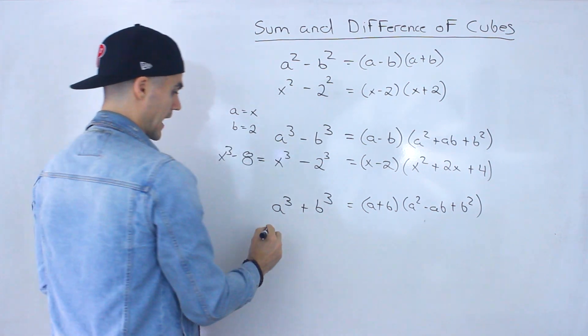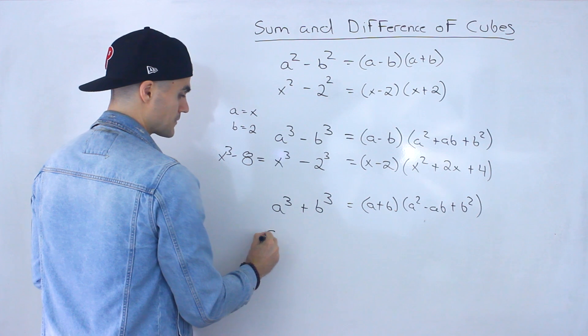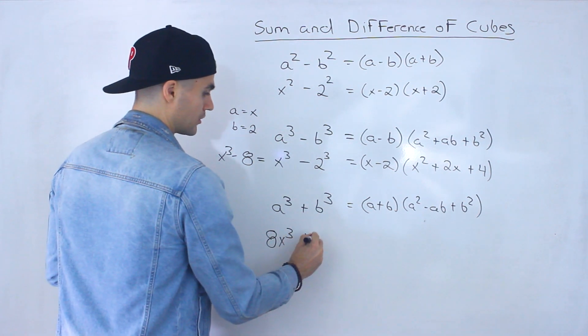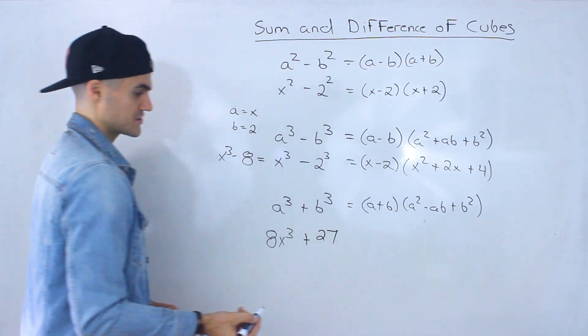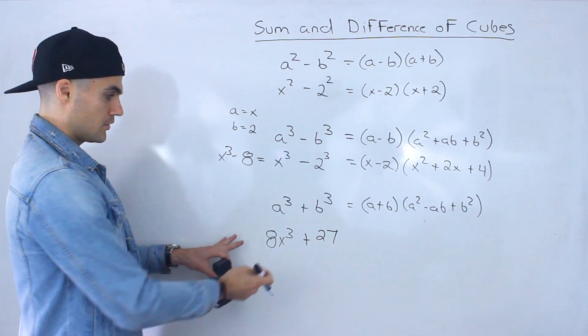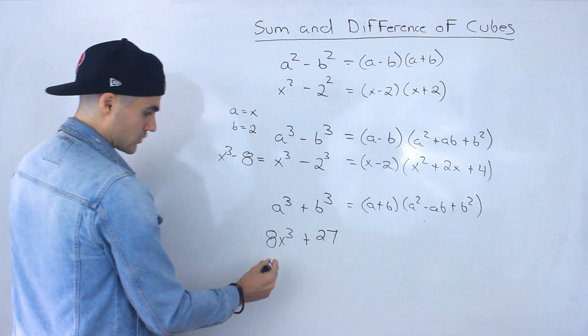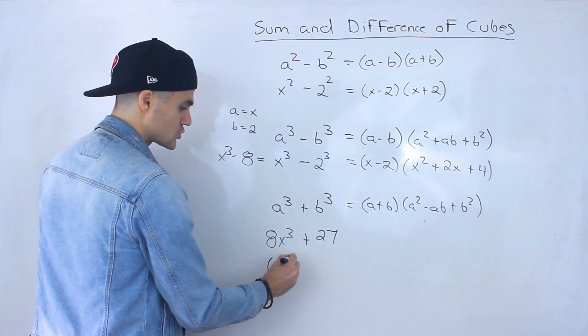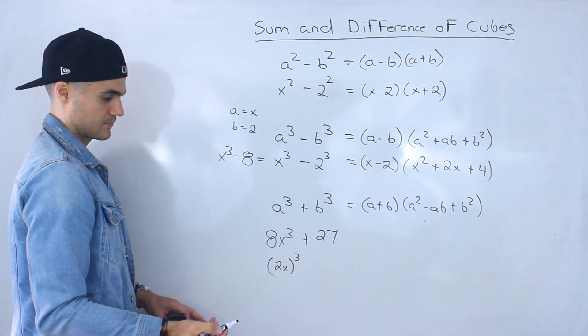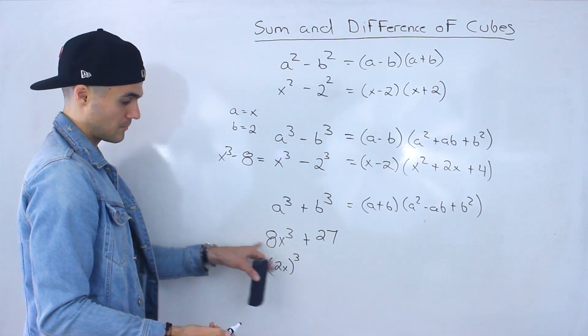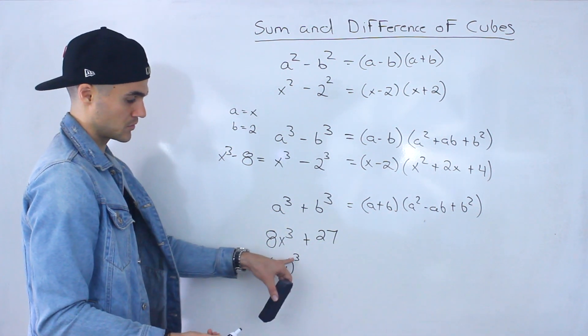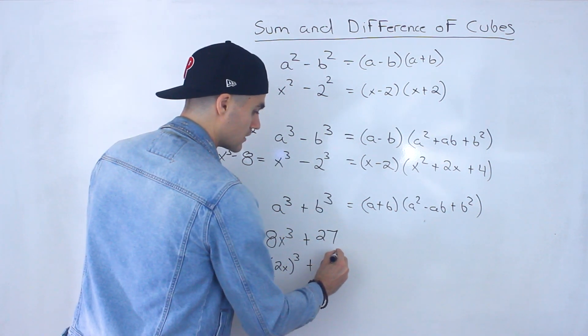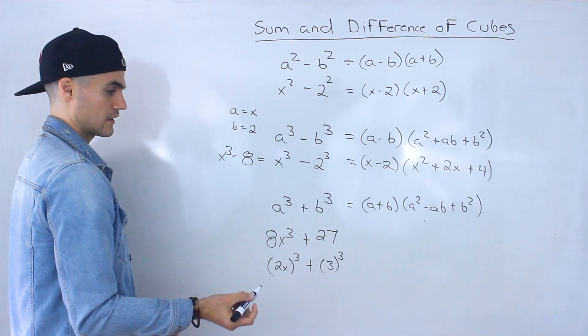Let's do a sum of cubes. So let's say we had 8x to the power of 3 plus 27, for example. Well, notice that this here we can actually rewrite, if we take the third root of this, that's the same as 2x to the power of 3 in brackets, because the 2 would go to the power of 3, which would give us 8, and then the x would go to the power of 3, which would give us x cubed. And then this 27 we can rewrite as 3 to the power of 3.